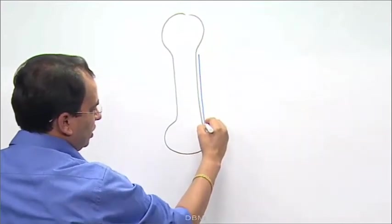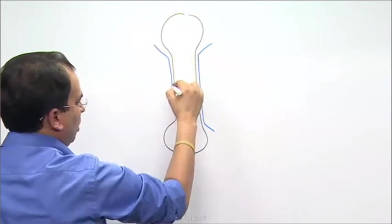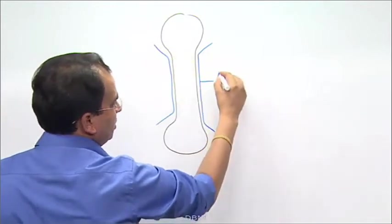The covering which is on the bone, this fibrous layer is called as periosteum. This is periosteum.